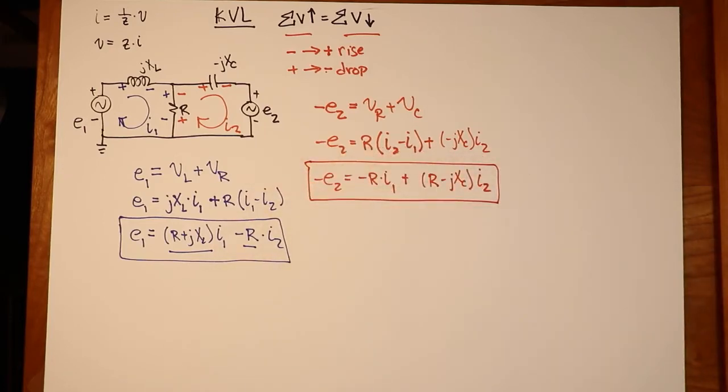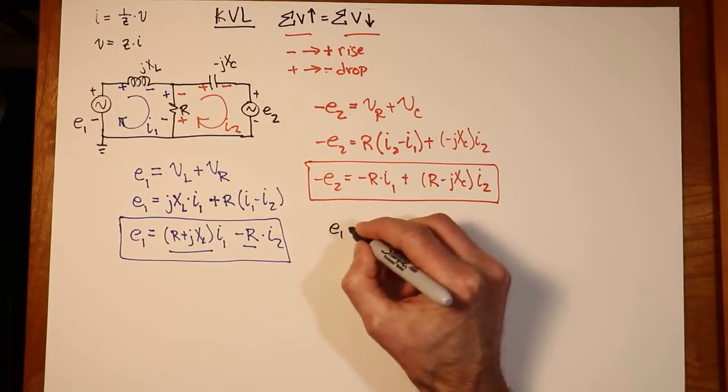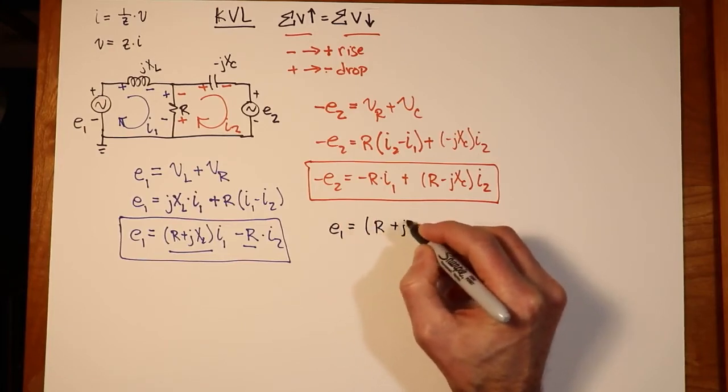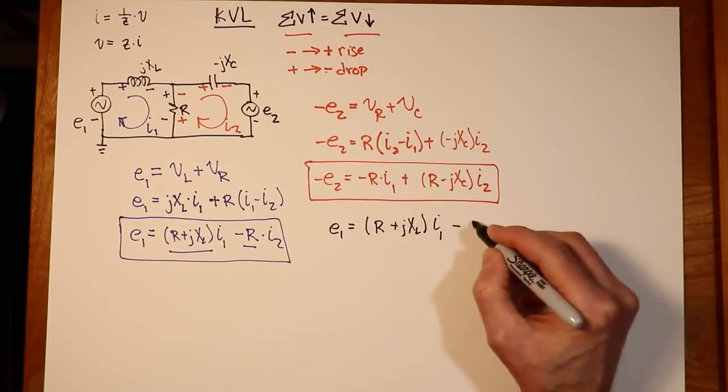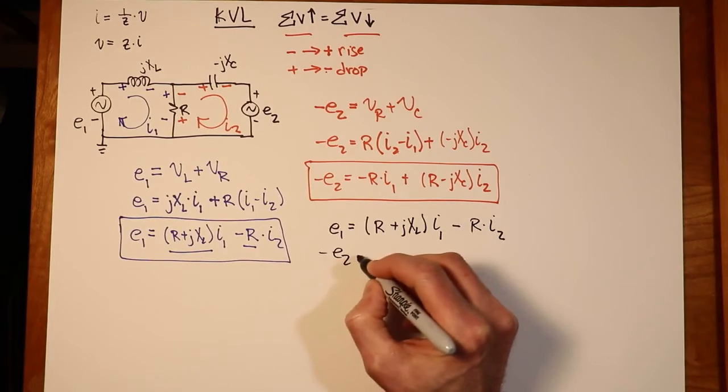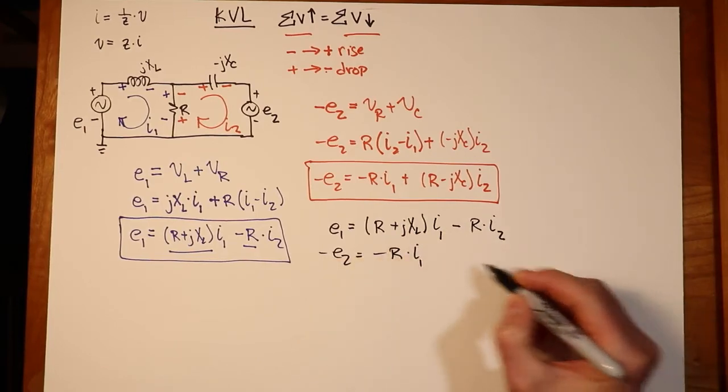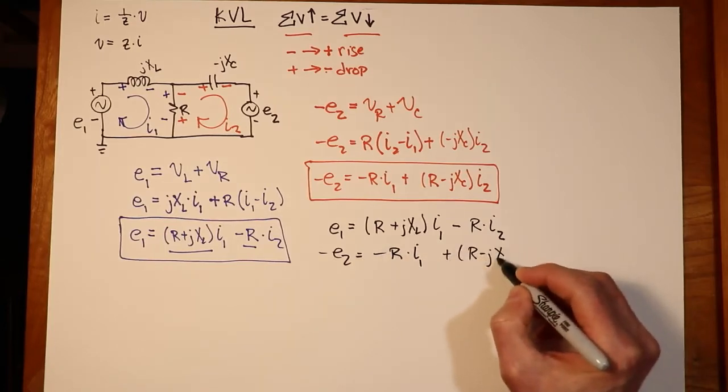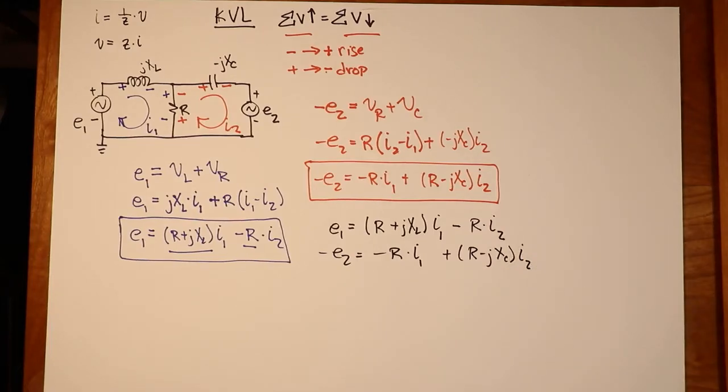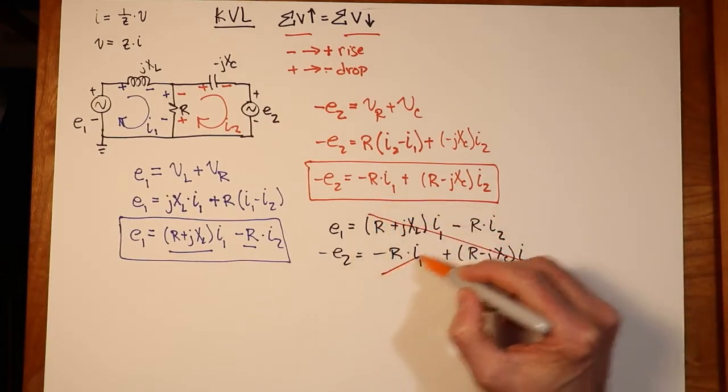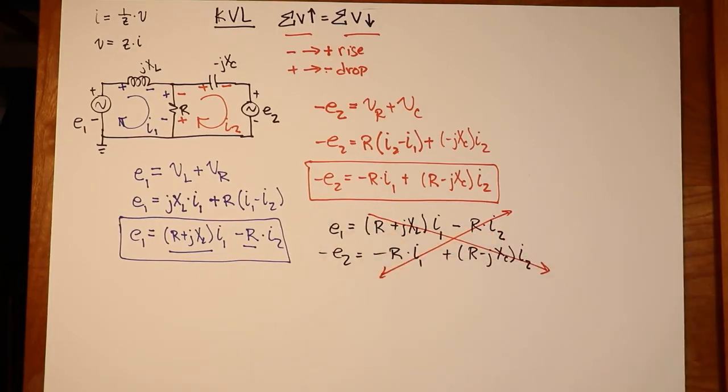Now let's put those together. We have E1 equals R plus JXL times I1 minus R I2. Second equation is a negative E2 equals a negative R times I1 plus R minus JXC I2. Just as we did in the nodal analysis, we want to check for diagonal symmetry. This is only a 2 by 2, so it's pretty easy to see. Negative R, negative R. Major diagonal is positive. Looking good. Now I can solve this using the same techniques that we used for nodal. And what we'll come up with will be two mesh currents. We'll come up with answers for I1 and I2.